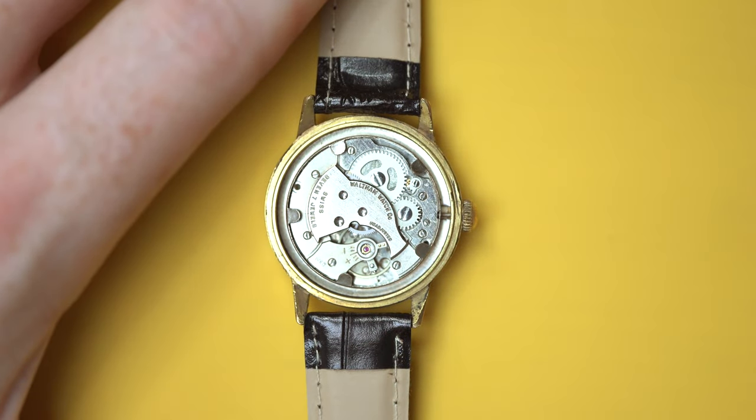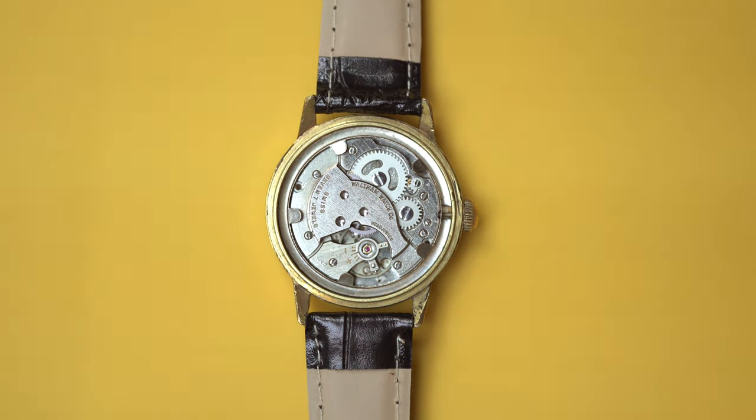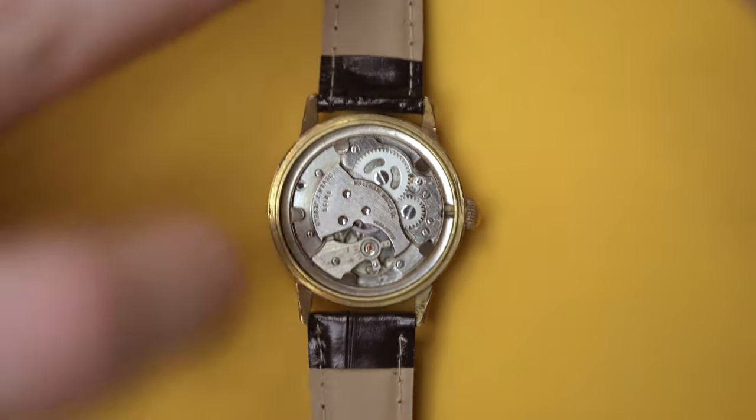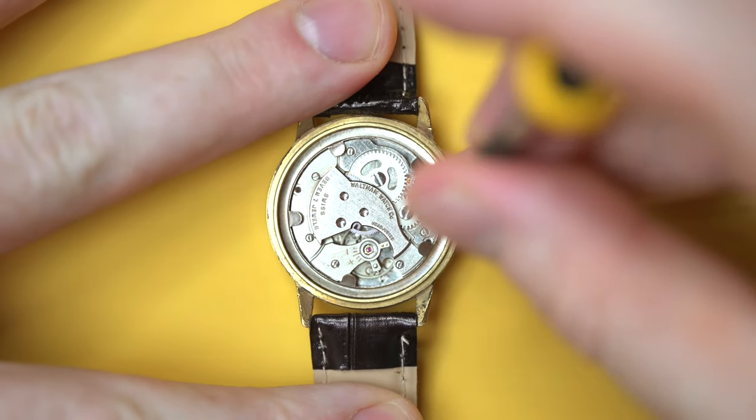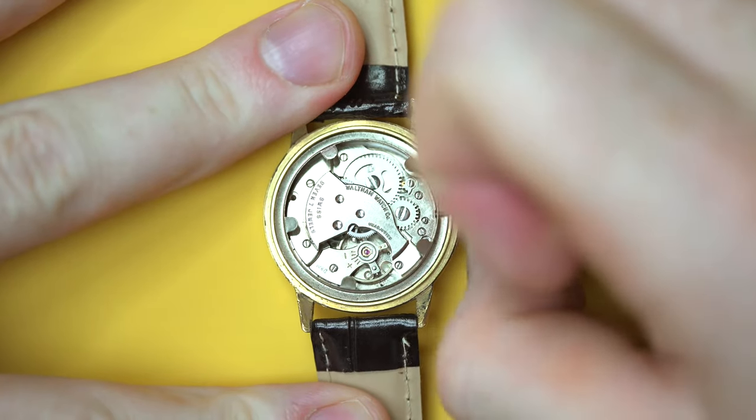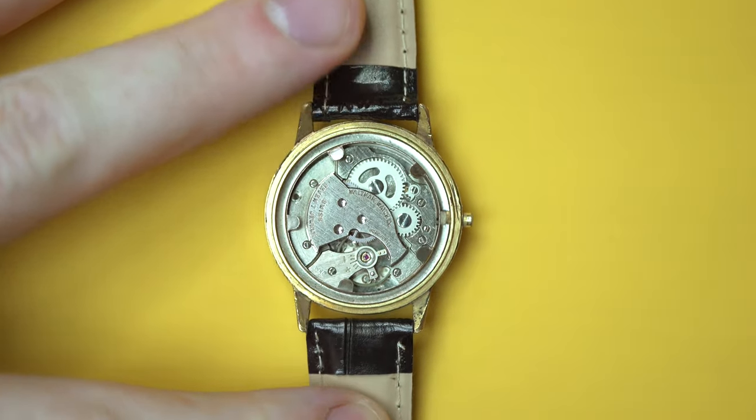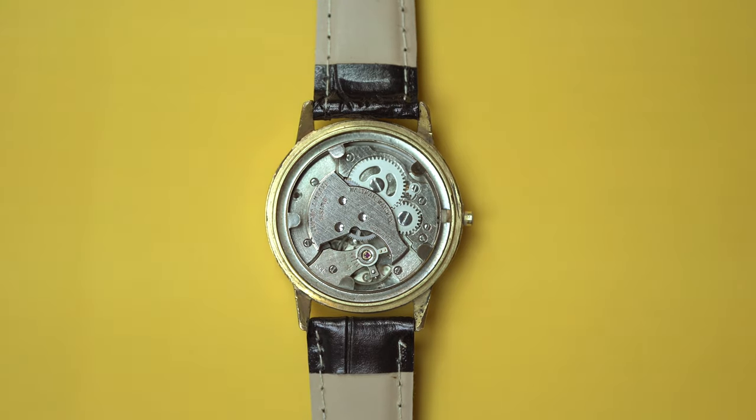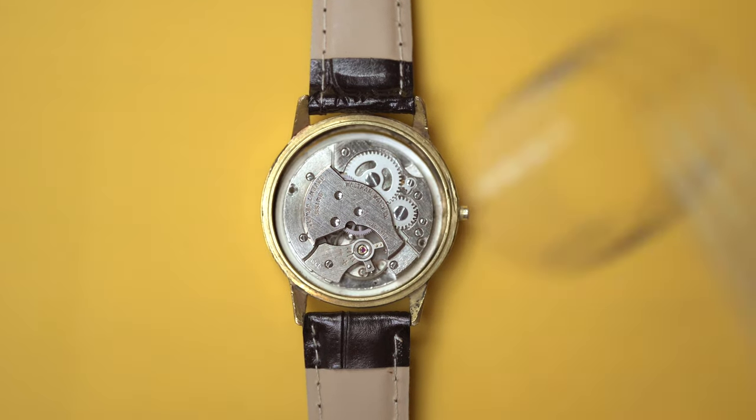So whilst I do the basics and take this movement out of the case, let's do a little research on Waltham Watch Company. Doing a bit of a Google search, Waltham Watch Co, they're an American company actually, operated from 1850 to 1957, and they actually declared bankruptcy in 1949.